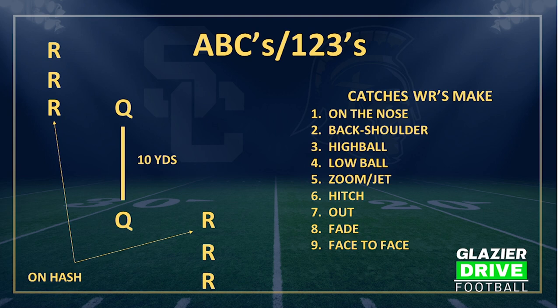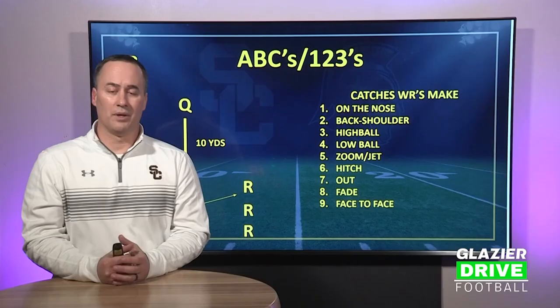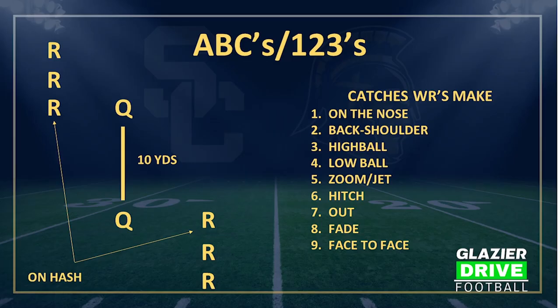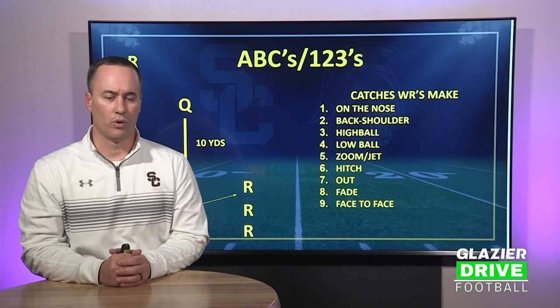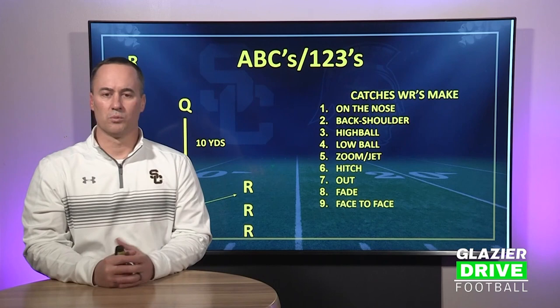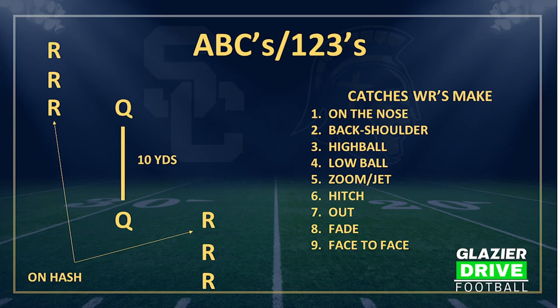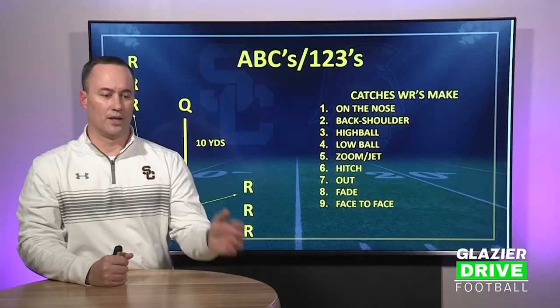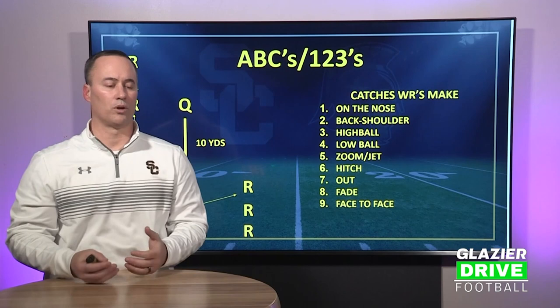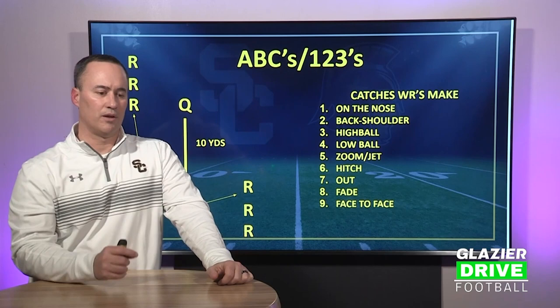The third catch is the high ball — catch above the head, rip it out of the air, spin away from contact, and tuck it before your feet touch the grass. The fourth is the low ball — pinkies together, bend at the waist, stab the football, tuck, and accelerate. For acceleration in this drill we want 'plus two' — two lines of full speed after the catch. The fifth opportunity is the zoom or jet: we pitch the football and work that zoom motion timing between center, quarterback, and motion man.